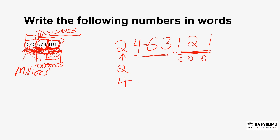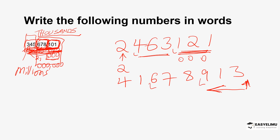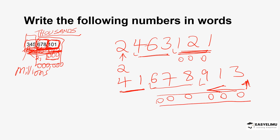If you have a number like 416,789,13 — note we start from the farthest end on the right, moving to the left, and group the digits in groups of three. The first three, the second three, and what remains is 41. If you reduce all six remaining digits to zeros, you'll be talking of 41 million, six hundred and seventy-eight thousand, nine hundred and thirteen.